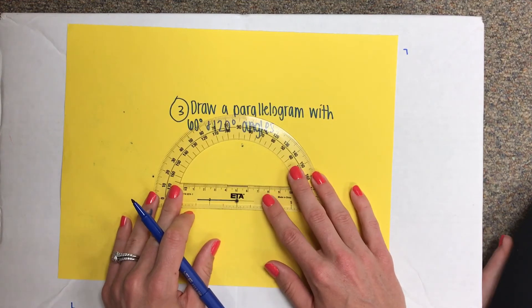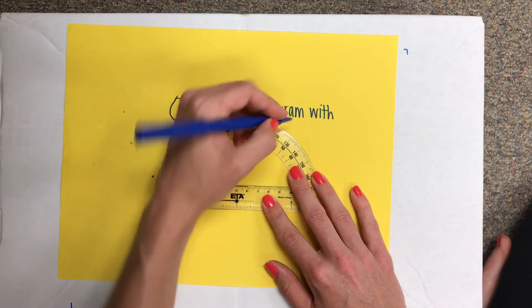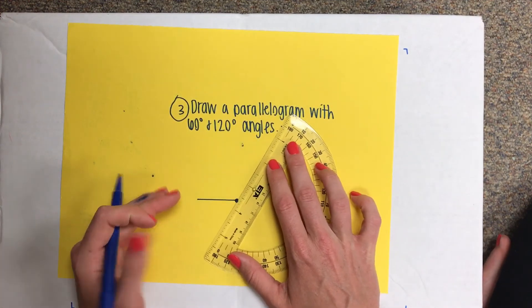and then with your biggest degree measurement, that's 120, so 0, 10, 20, 30, here's 90, 120 is going to be all the way over here. Tick mark and connect.